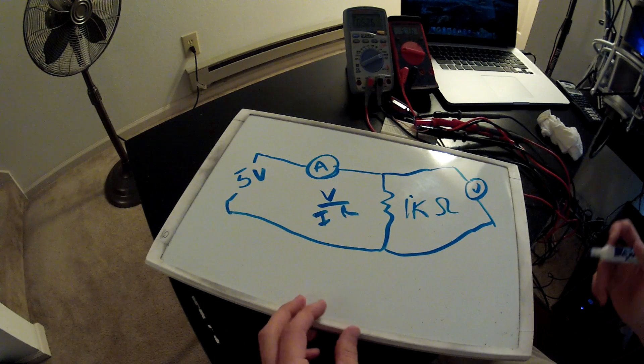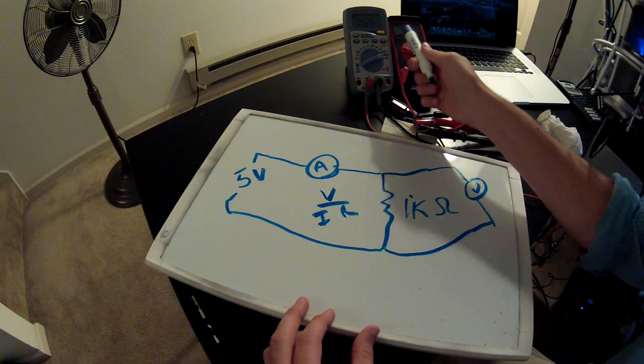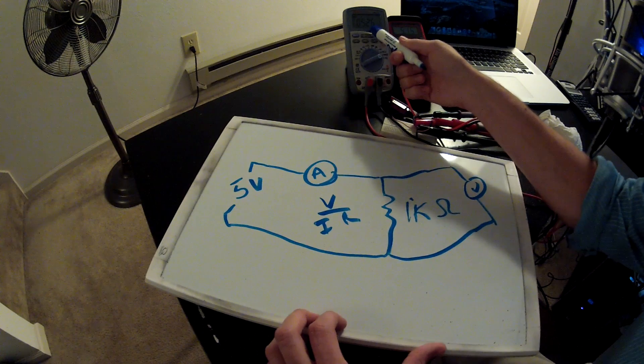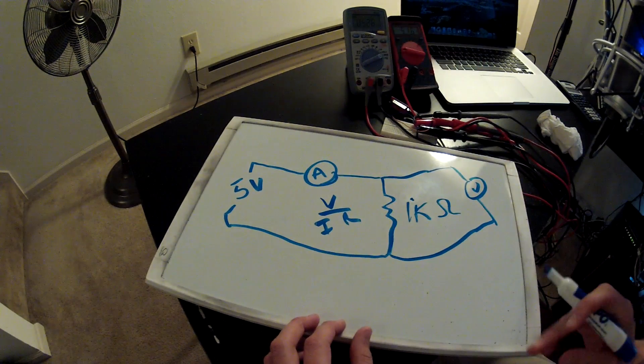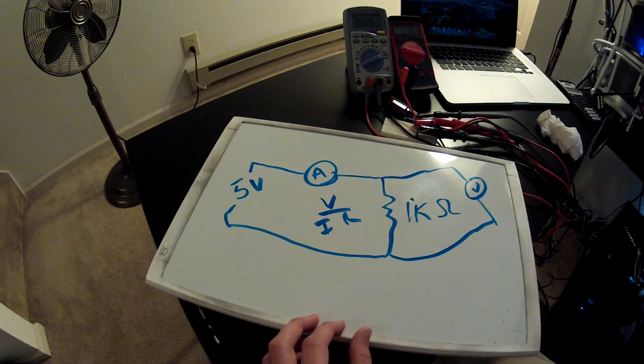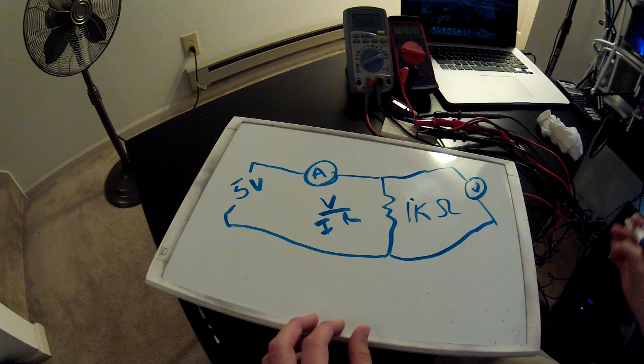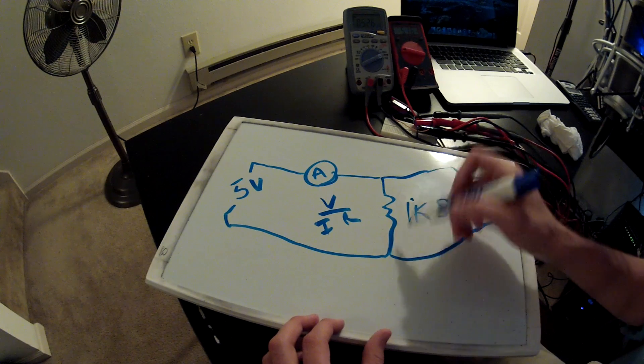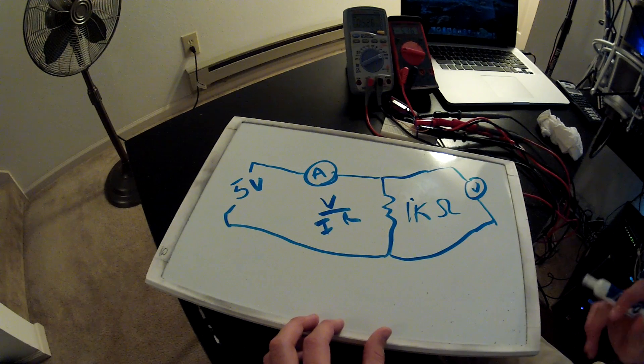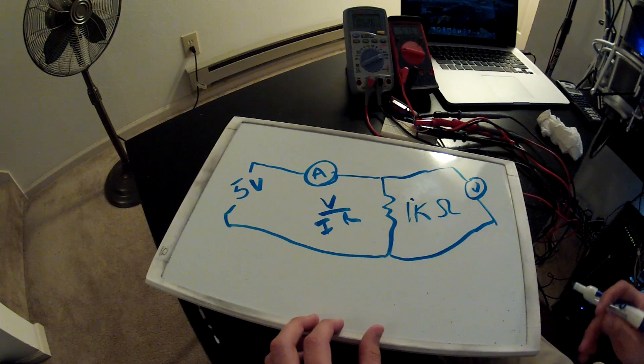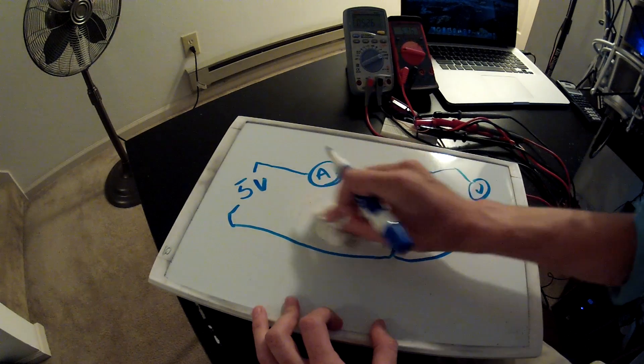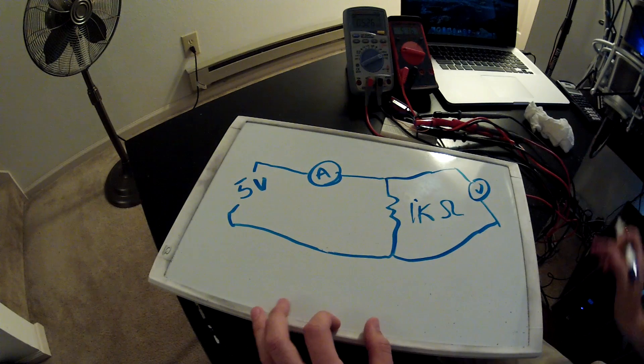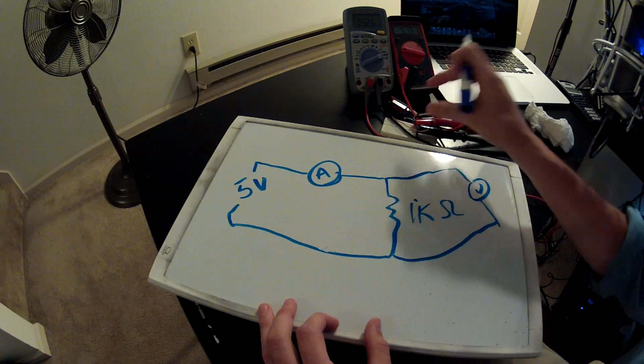So right up here we do see we have 5.26 milliamps. We're putting 5.16 volts across it, so it's not going to be perfect just because there are some tolerances in the resistor and my voltage supply is not perfect either.